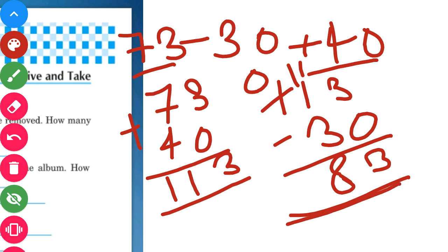Kids, you must have observed that by both methods our answer remains the same — 83. The property of addition is verified here: we can do any sum by the method of regrouping as well. Now let us move to the next question.